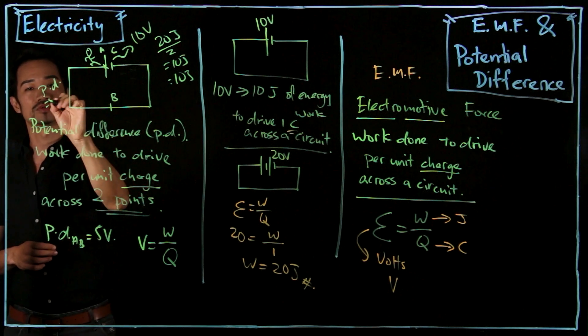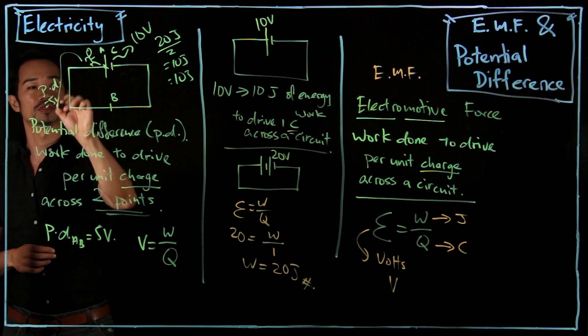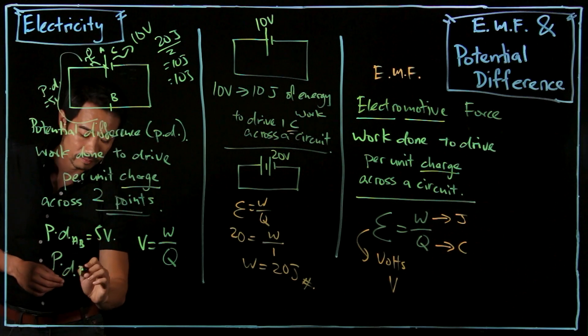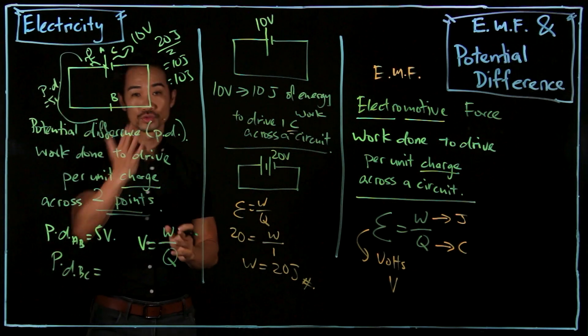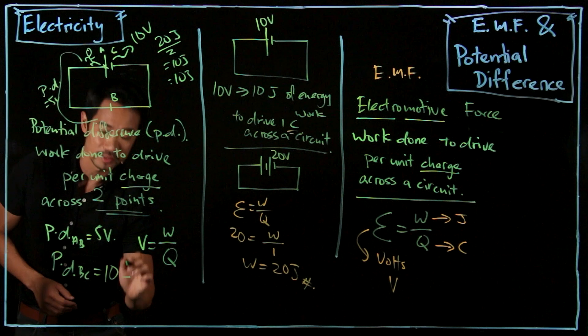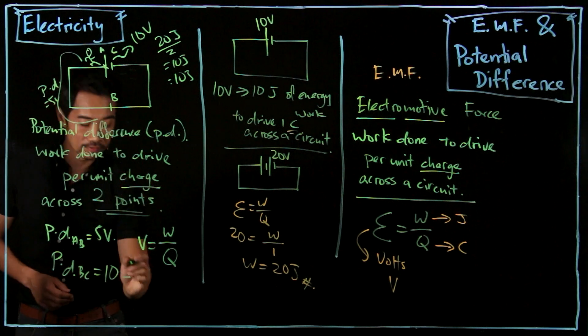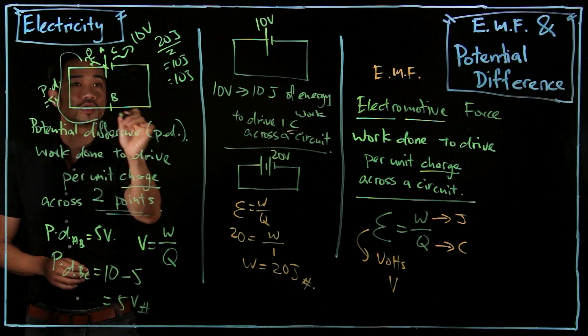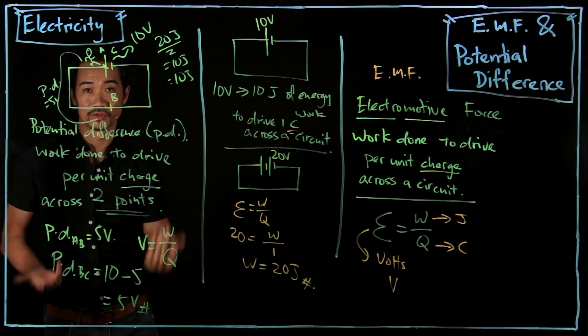And then if the PD over here is 5 volts from here to here, then what is the potential difference from B to C? How do you find? You take the total, 10, minus away this part, 5, and then you get 5 volts. So PD from B to C is also 5 volts.